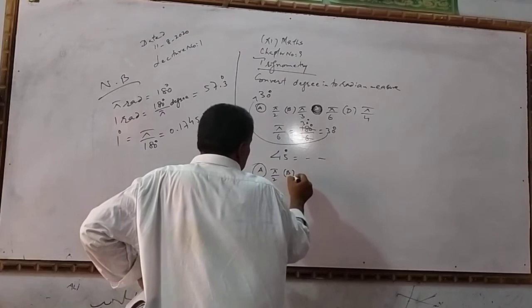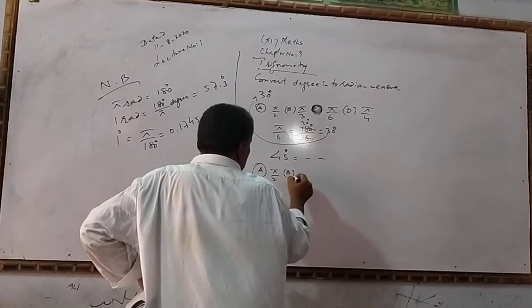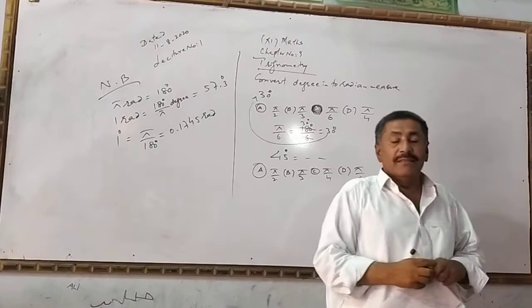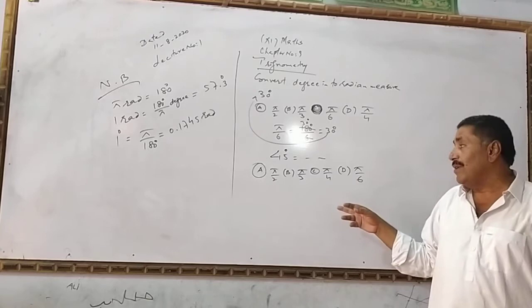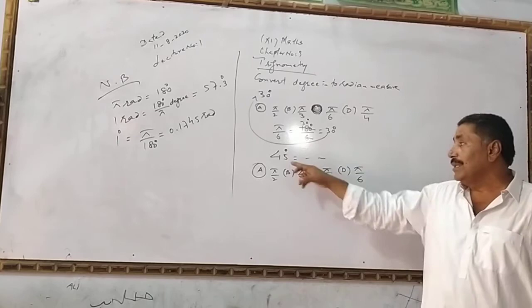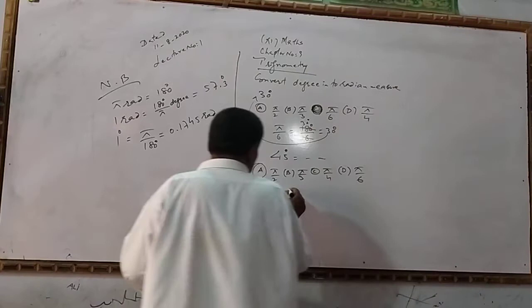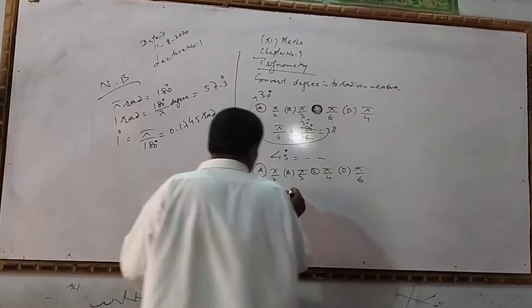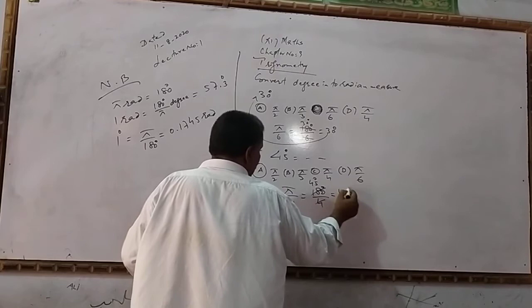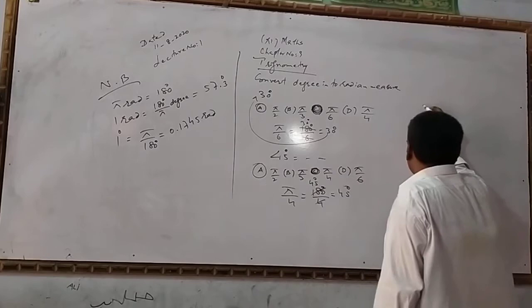For 45 degrees equivalent, the options are: A) π/2, B) π/3, C) π/4, D) π/6. When you convert, the answer would be π/4. π is 180 degrees divided by 4, which equals 45 degrees.